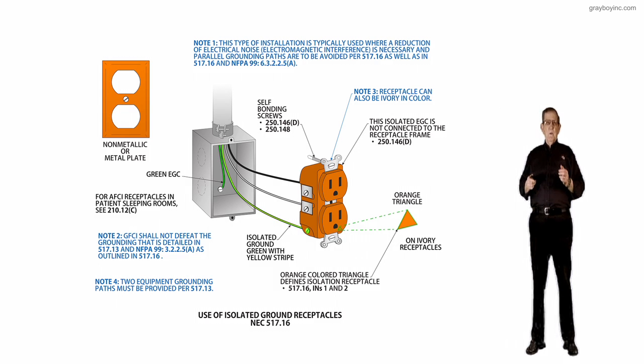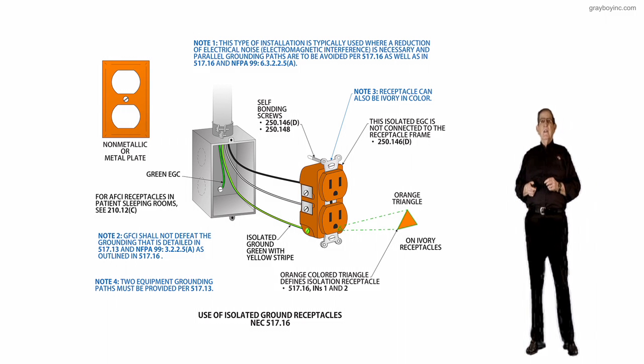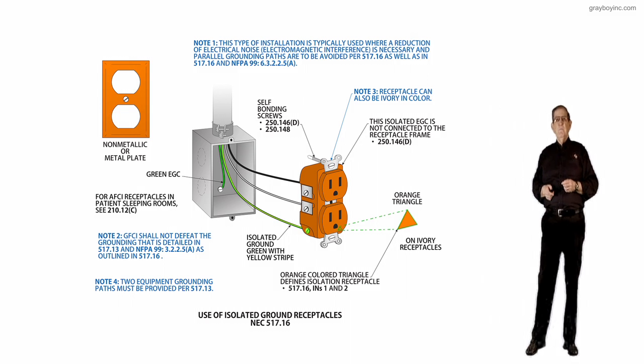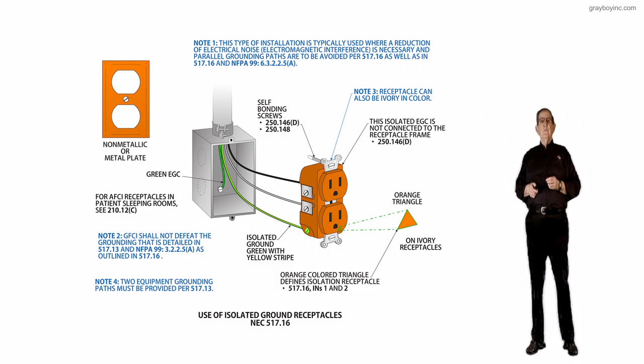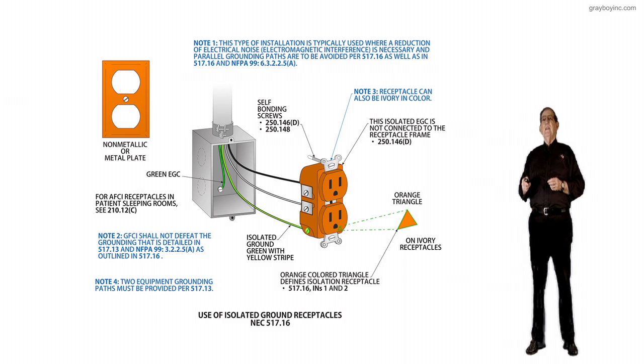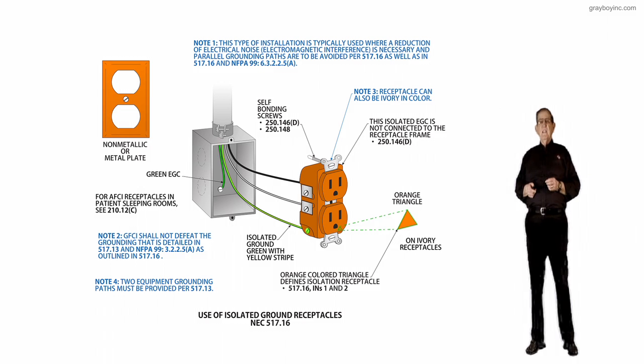If we review note 2, which is right at the very bottom of the device box that housed the receptacle, notice GFCI shall not defeat the grounding that is required in detail in 517.13 as well as NFPA 99 6.3.2.2.5 uppercase A as outlined in 517.16.